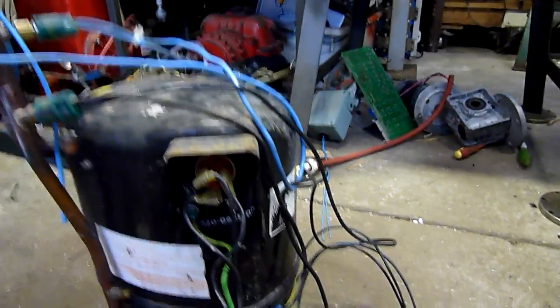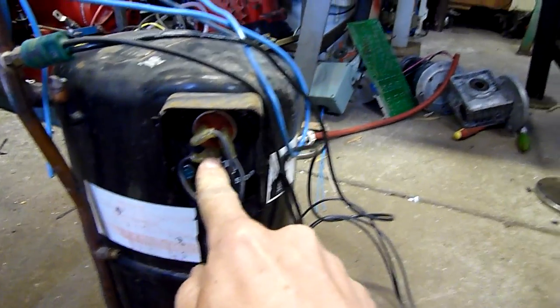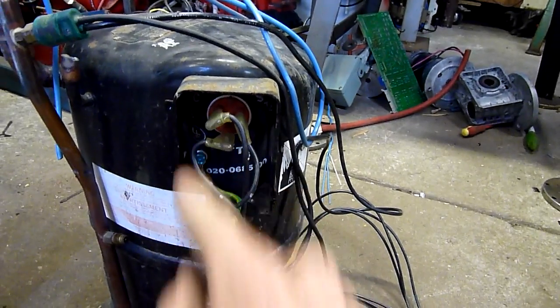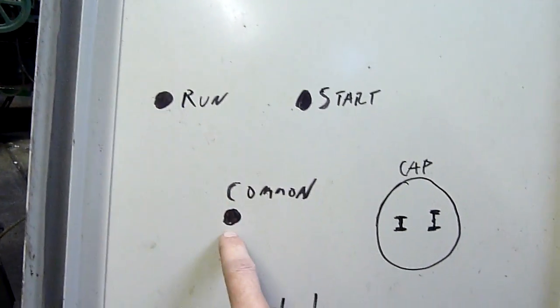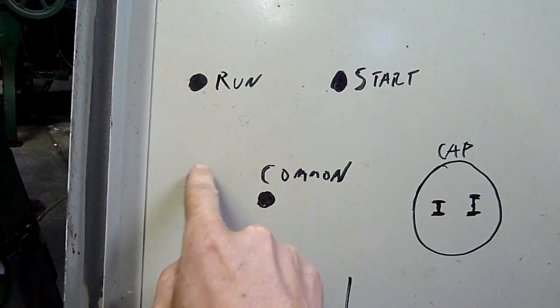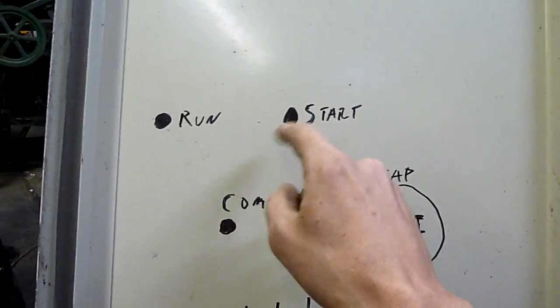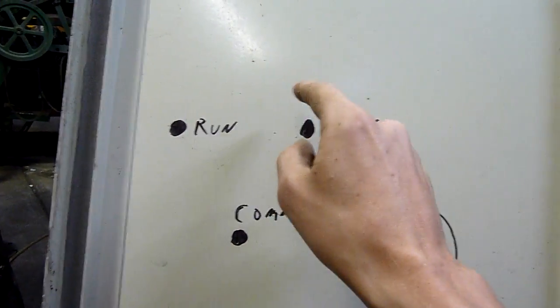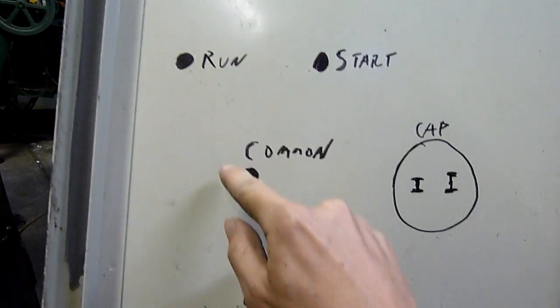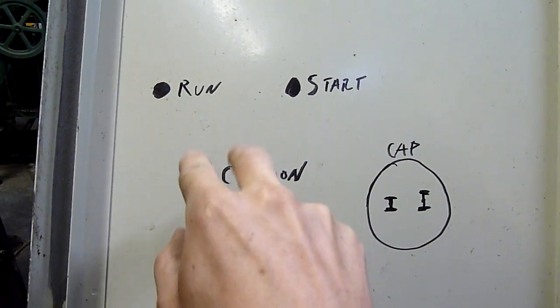If it's a single-phase compressor, you can ohm from common to each of the start and run terminals - common to run and take a reading on ohms, common to start, take a reading and compare the two. Read from run to start and that reading should equal these two readings combined, added together.